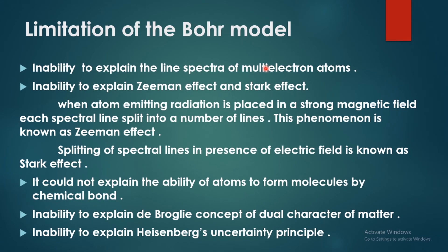Hydrogen is a one-electron atom — that is why Bohr explained it successfully. But the line spectra of atoms with more than one electron — he failed to explain those.